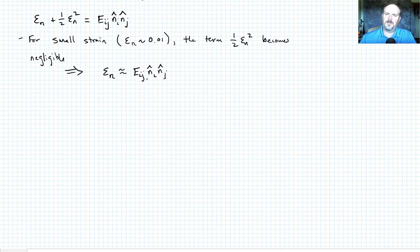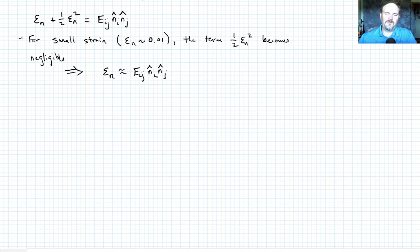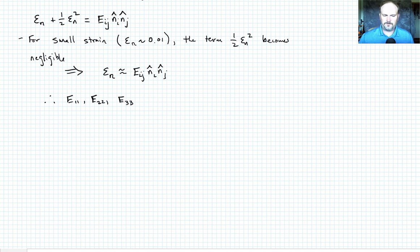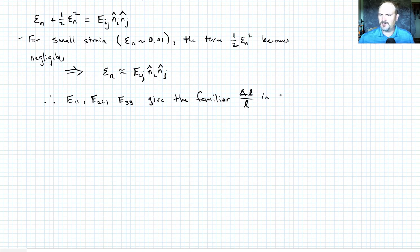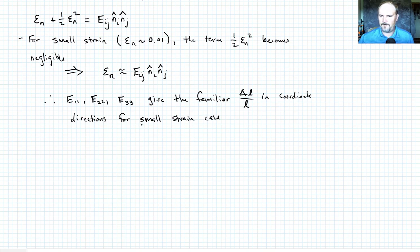Plugging in n = (1,0,0) gives that the nominal strain in the 1-direction equals e11; using (0,1,0) gives the strain in the 2-direction equals e22; and similarly for e33. So e11, e22, and e33 give the familiar ΔL/L in the coordinate directions for the small strain case.